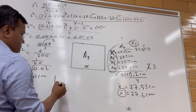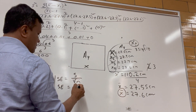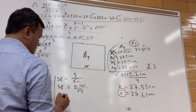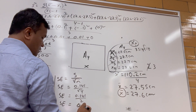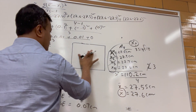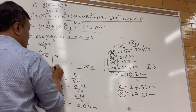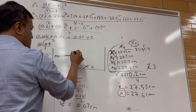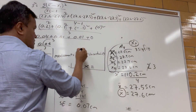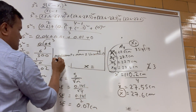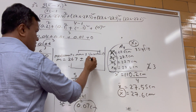Now we find the uncertainty, which is the standard error: S over the square root of n. That's 0.141 divided by the square root of 4, which is 0.141 over 2, giving 0.07 centimeters. We can now write the measurement as: measurement equals mean plus or minus uncertainty, so x equals 27.55 ± 0.07 centimeters.